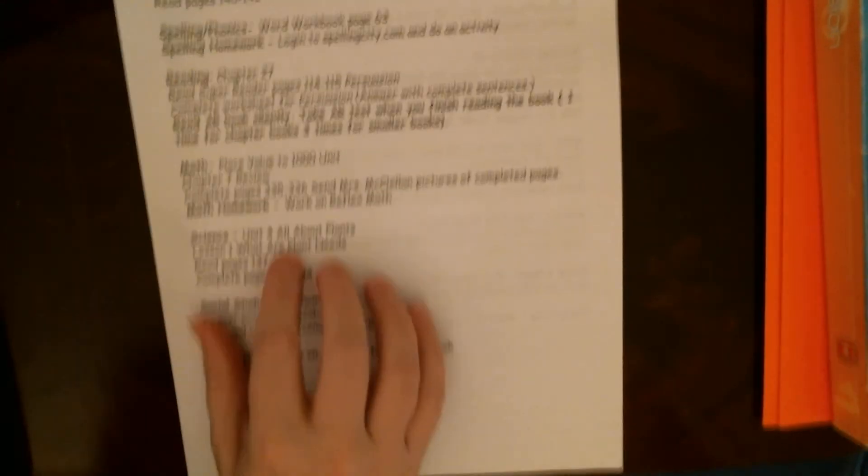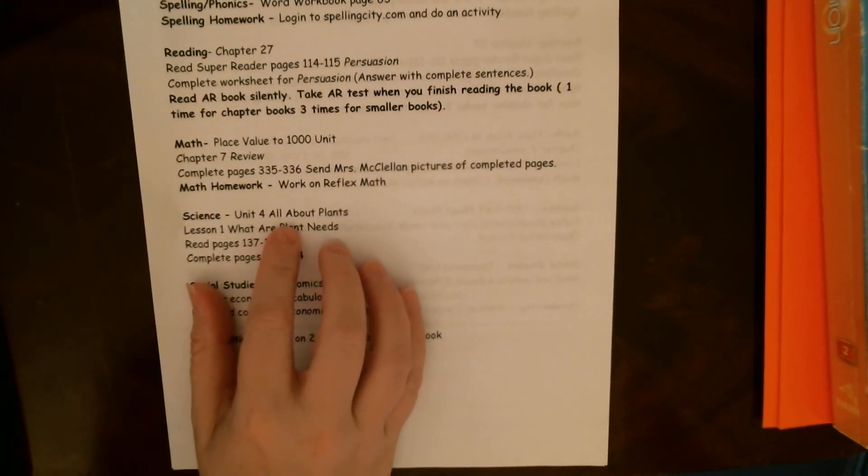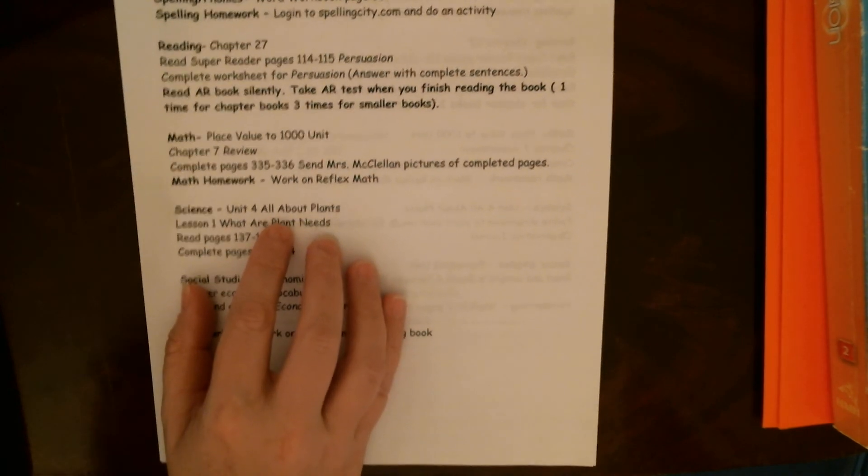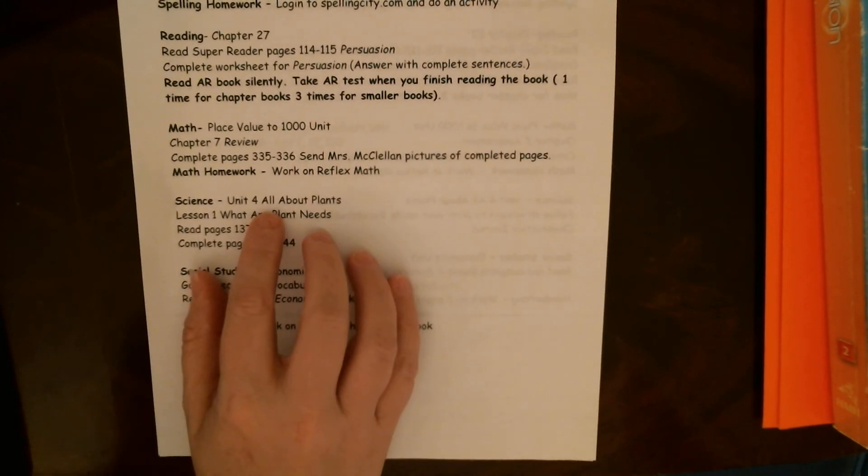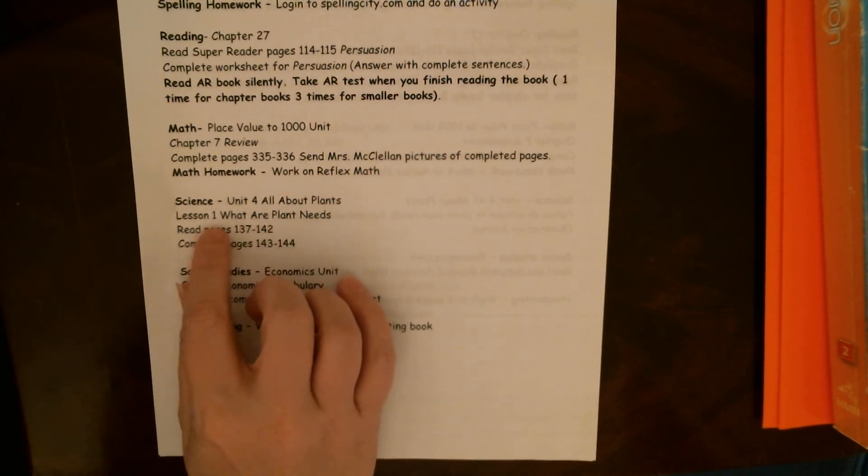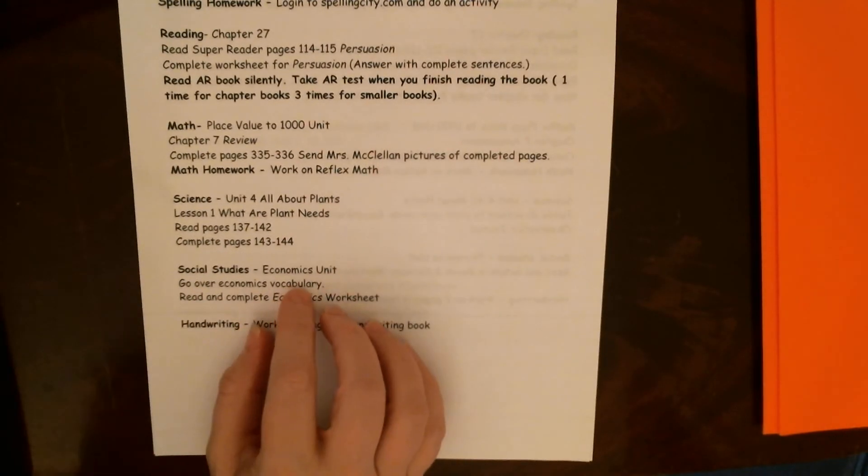For science, we have wrapped up our animal unit. We will be sharing our dioramas tonight at 7pm on Zoom as a test grade. So you guys need to all log in so we can share those. For science, you're going to read all about plants unit four. It's our first lesson. I'm going to have a separate video on that where I will read that with you guys and we'll have some discussion.